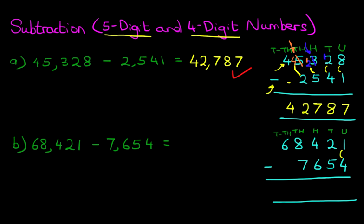As always, we start with the units column. We've got 1 minus 4. 1 minus 4 we cannot do because 1 is smaller than 4, so let's take 1 from the tens column. Let's cross out the 2; 2 minus 1 is 1. The 1 we have taken away, we add to the units column, so the units column has now become 11 minus 4. 11 minus 4 is 7. Now for the tens column, we've got 1 minus 5. This is something we cannot do because 1 is smaller than 5, so we take 1 from the hundreds column. Let's cross out the 4; 4 minus 1 is 3. The 1 we have taken, we add to the tens column, so the tens column has now become 11 minus 5. 11 minus 5 is 6.